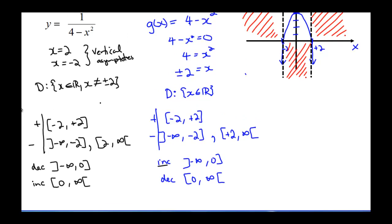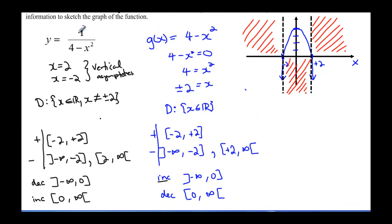From this information, we can draw a sketch of the original graph. We also know the horizontal asymptote: since the numerator is 1 — degree zero — and the denominator has degree 2, the degree of the numerator is less than the degree of the denominator, so the horizontal asymptote is the x-axis. I'll sketch the graph in the valid regions using the asymptotes as guides.